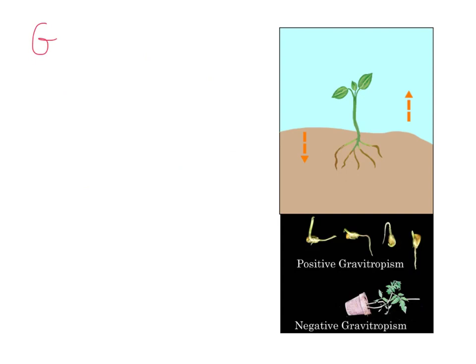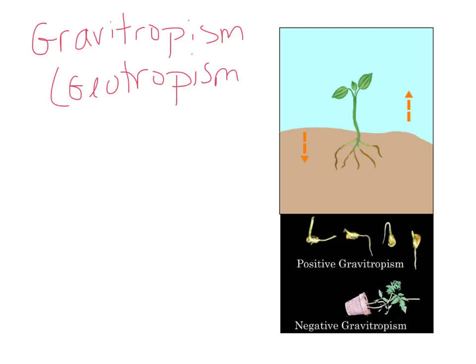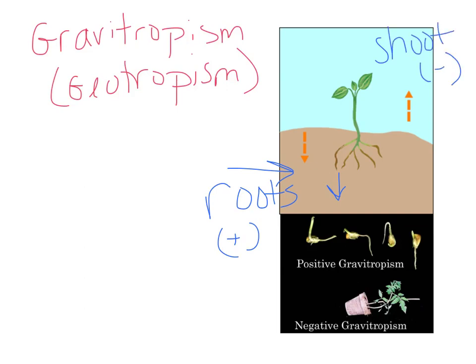The next one is gravitropism, or geotropism — growth in response to gravity. Most plants will exhibit both positive and negative gravitropism. The roots show positive gravitropism because they grow down with gravity, while the shoot system shows negative gravitropism because it grows against gravity.